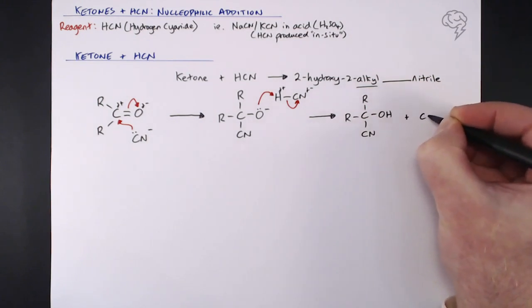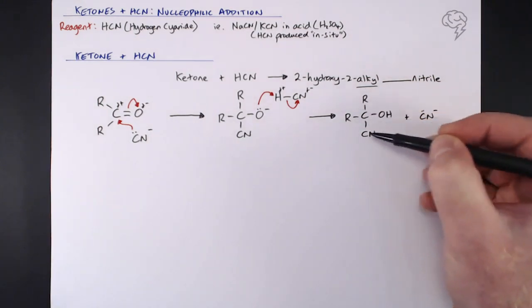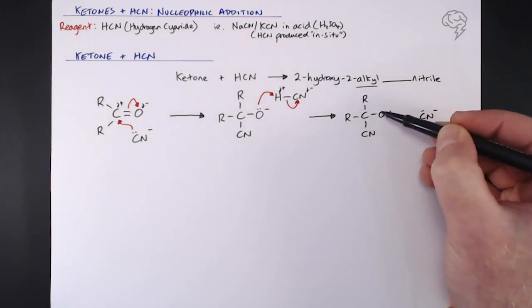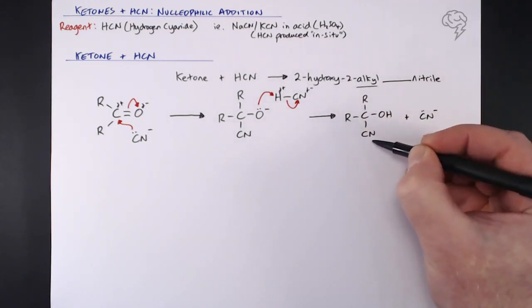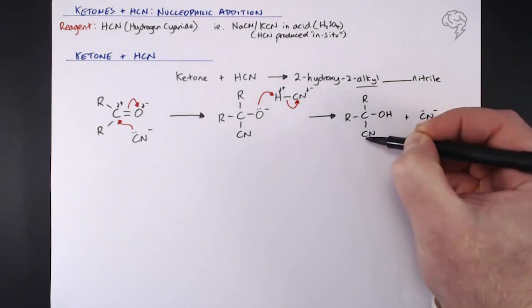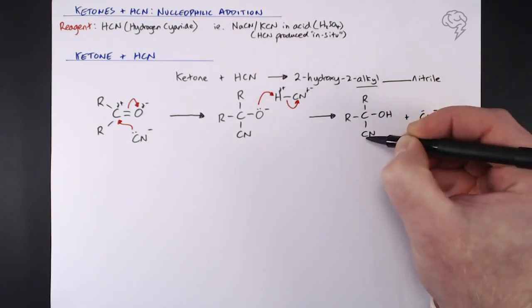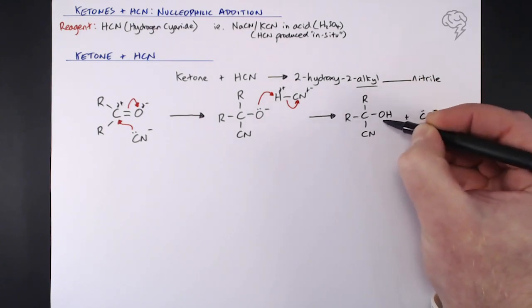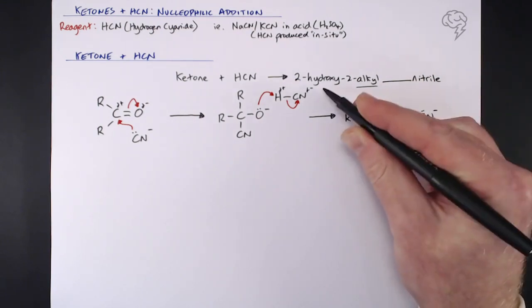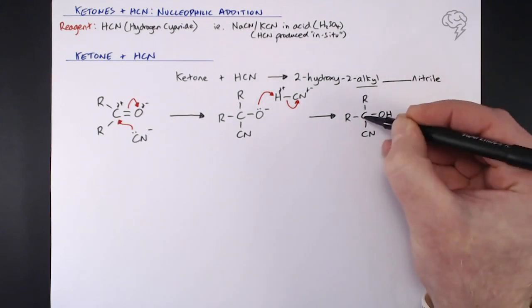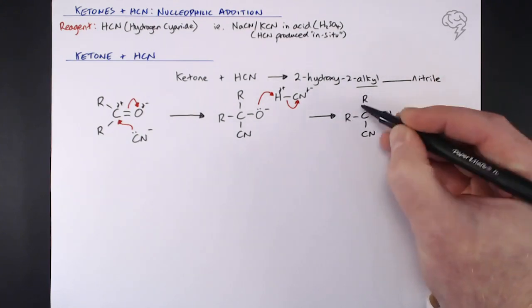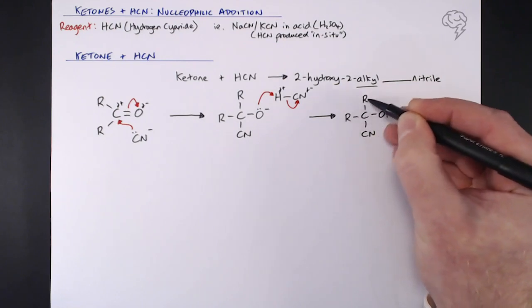In this molecule, we do get 2-hydroxy because the nitrile group assumes carbon number one position. The main chain length goes up and over, so this is carbon number two, which is why it's 2-hydroxy. Which way the carbon chain reads is completely dependent on the length of the R groups.